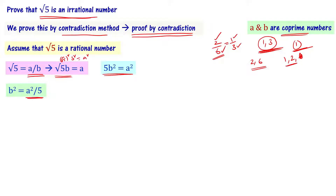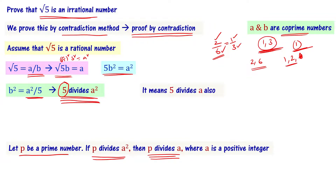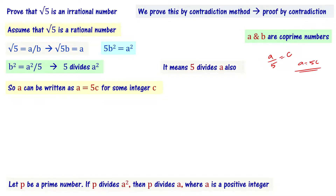This means a square is divisible by 5, or 5 divides a square. Let p be a prime number — if p divides a square then p divides a also. Since 5 is a prime number, 5 divides a also. It means 5 divides a, so a by 5 can be some constant. Let me call this constant c, then I can write a equals 5c for some integer c.